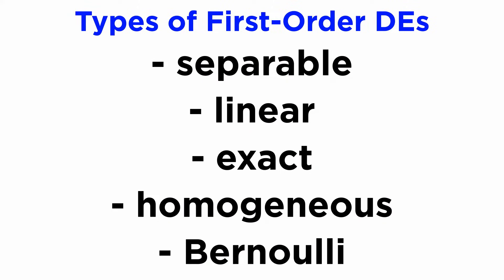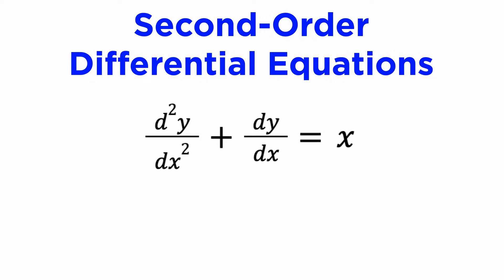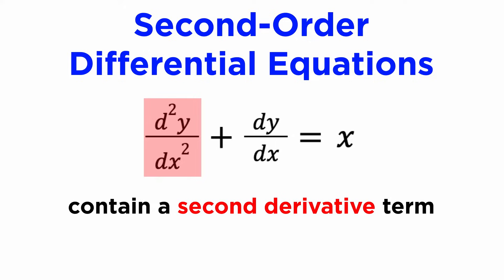We've spent the past few tutorials looking at first-order differential equations, but now it's time to move on to second-order differential equations. As the name suggests, these are DEs that contain a second-derivative term, like d squared y dx squared. What could such a thing be used for?